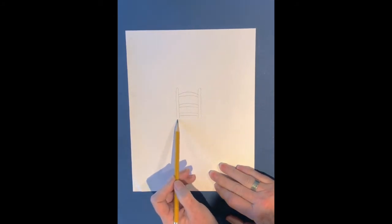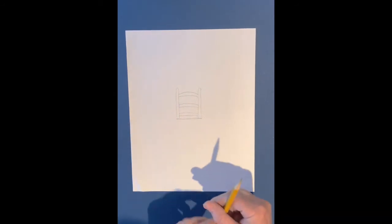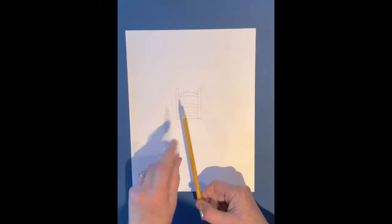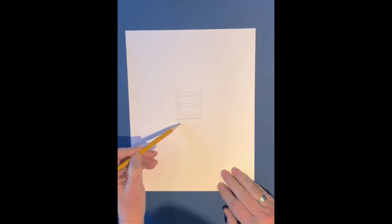Now we're going to make the seat of the chair. So the seat of a chair is really a box shape. So first we're going to draw a trapezoid and we're going to off-center the front of the chair from the back to make that trapezoid shape.